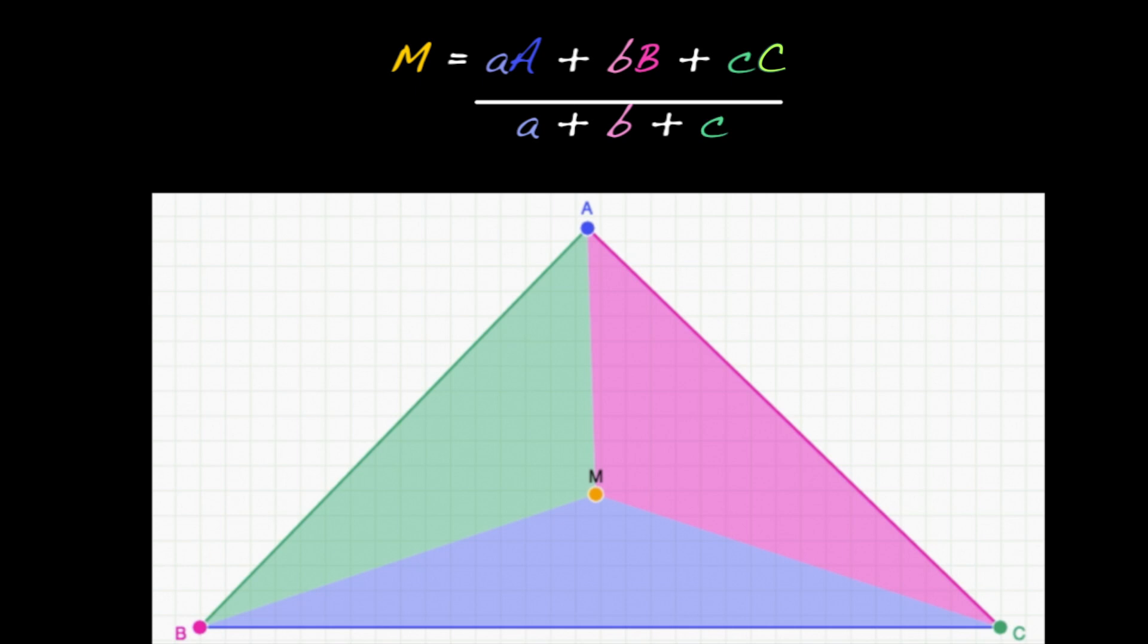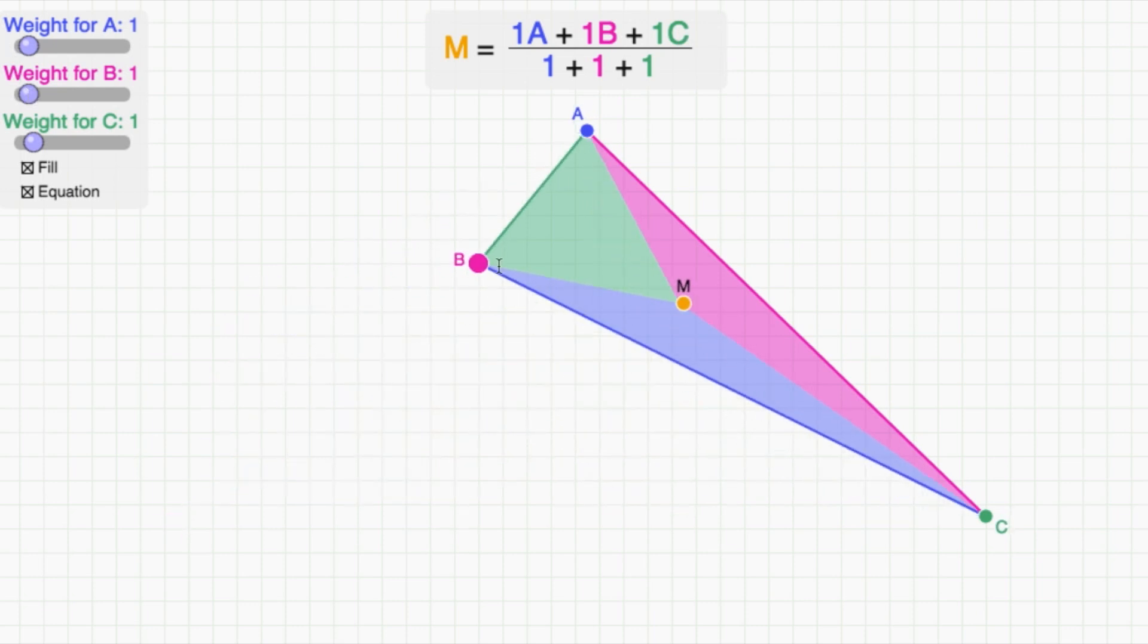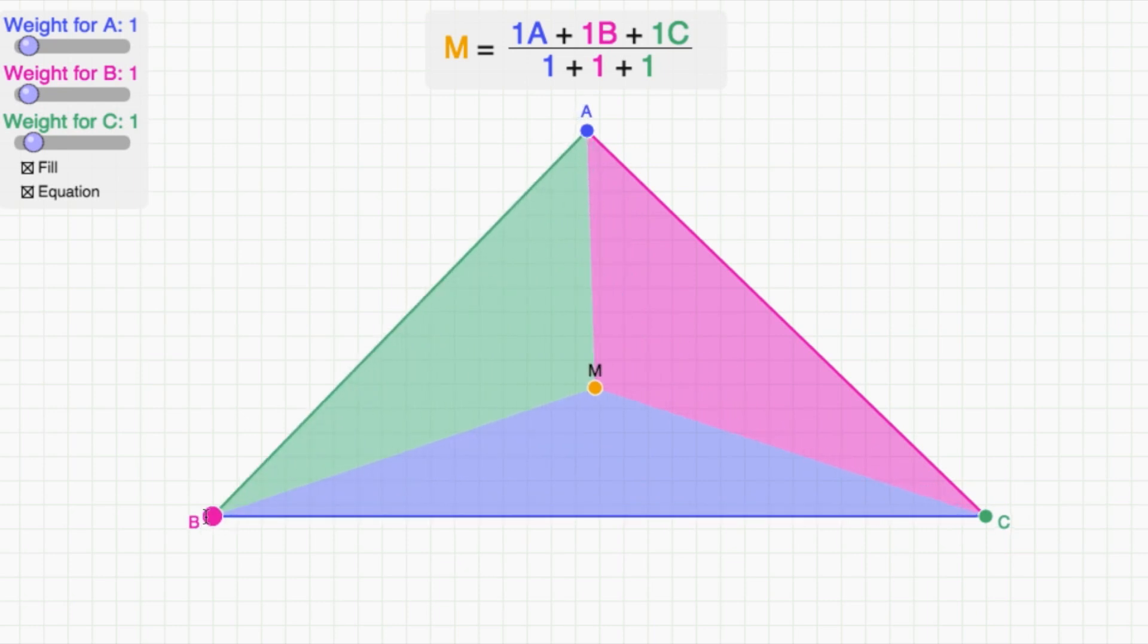The geometry says that the sub triangle areas are in the ratio a to b to c. Here, all of the weights are one, so that m is the midpoint and all of the areas are equal. So, suppose we want to weight b twice as heavily as a or c.